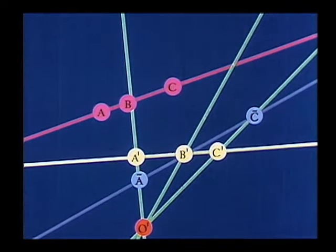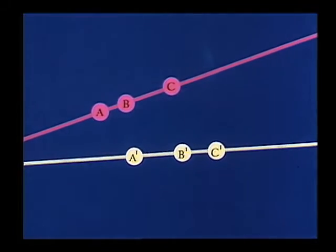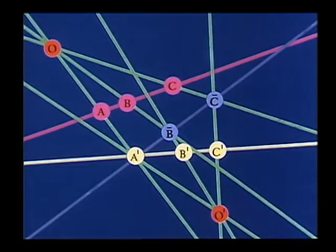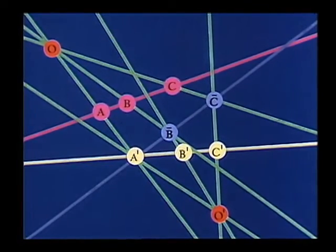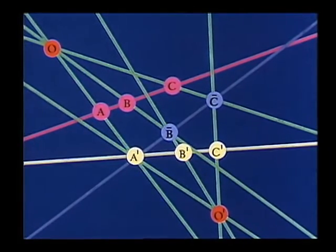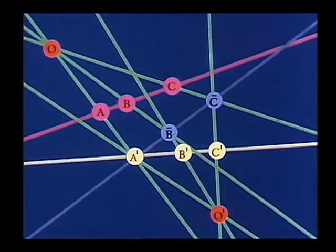Any product of perspectivities is called a projectivity. In the previously constructed projectivity, A, B, C is said to be projective with A prime, B prime, C prime. A, B, C projective with A prime, B prime, C prime.